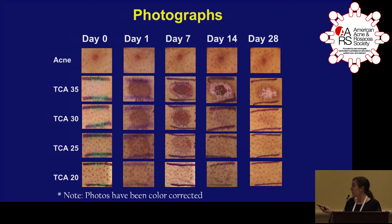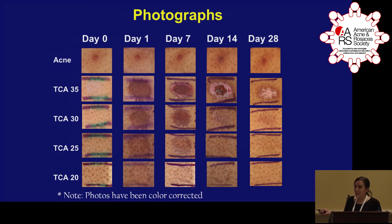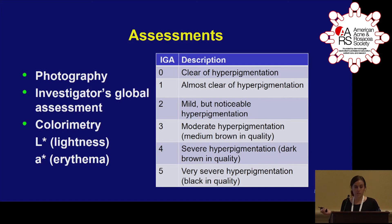At day 28, we saw that the acne lesion had resolved and we were left with PIH. At the 35% TCA level, we saw hypopigmentation in the center and hyperpigmentation on the outside, but it was uneven and not very similar to the PIH seen with acne. At TCA 30% and 25% concentrations, we saw PIH that was pretty similar to the acne-induced PIH, and at 20% we didn't see much PIH. Day 28 was the time point used for our IGA scores and colorimetry data analysis.